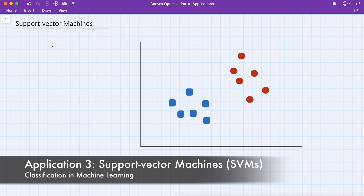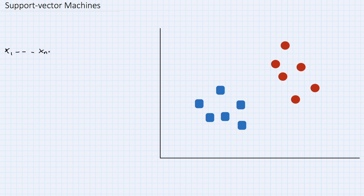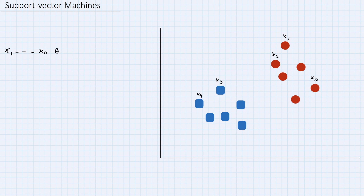Let's say we have data points x1 down to xn. This one is x1, this one is x2 — the ordering doesn't matter — so we can label the rest x3, x4, down to x12 for 12 points. Each of those points lies in a p-dimensional space; that is, each can be regarded as a vector. In this example, p equals 2 — we have the x-axis and the y-axis, or x1 and x2.